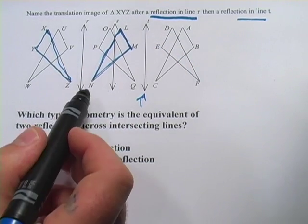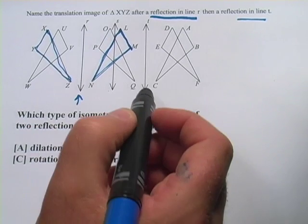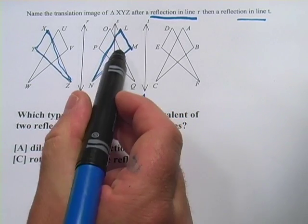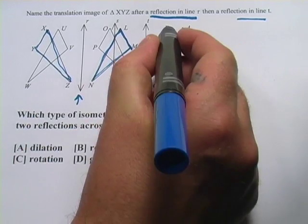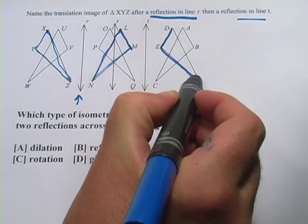So that's our first reflection. And then we're going to reflect it again. And what happens when you reflect it again is the orientation changes back to the way it was originally. So we're going to end up with DEF.